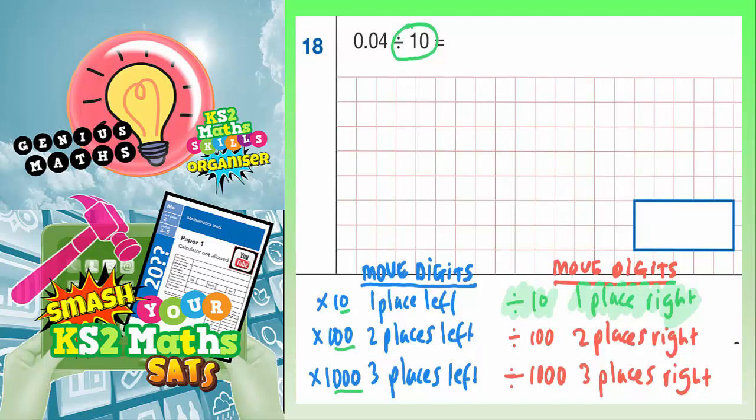So first thing I'm going to do is I'm going to write the original number now. So 0.04. I'm even going to put some column headings in. So this first 0 is in the units column, then tenths, then hundredths,